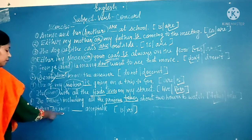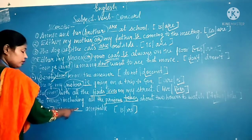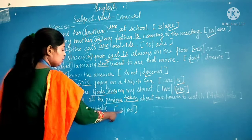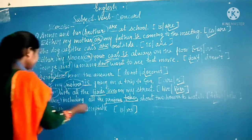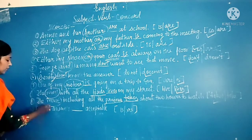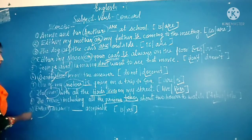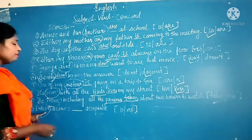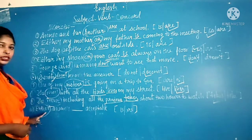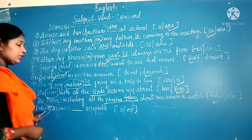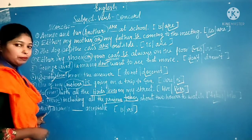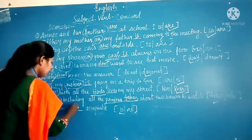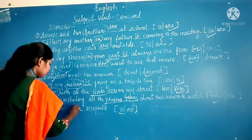The last sentence: 'Either answer ___ acceptable.' The options are 'is' and 'are.' Here 'either' refers to anyone of two — a singular idea — so the subject is singular. Therefore, 'is' is the correct answer.